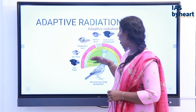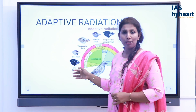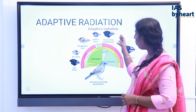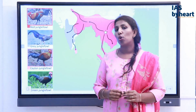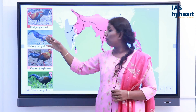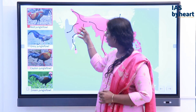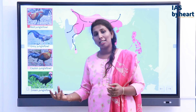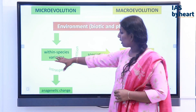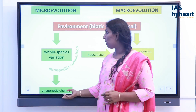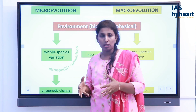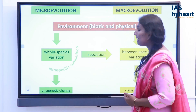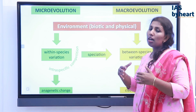Darwin also talked about adaptive radiation — how a single species gets different varieties based on their habits and habitats. The same type of fowl living in Asia has different variations and coloration based on its habitat and food habits. Small-level variation within a species leads to anagenetic change, and steadily these variations accumulate, leading to speciation — the formation of new species — and ultimately macro evolution, which is the creation of new species from a predominant ancestor.